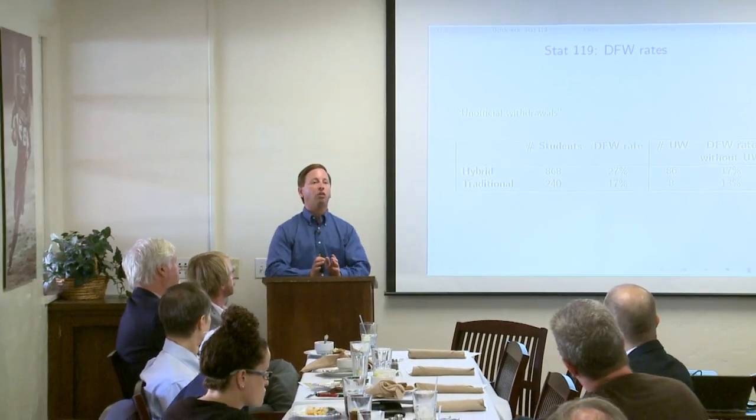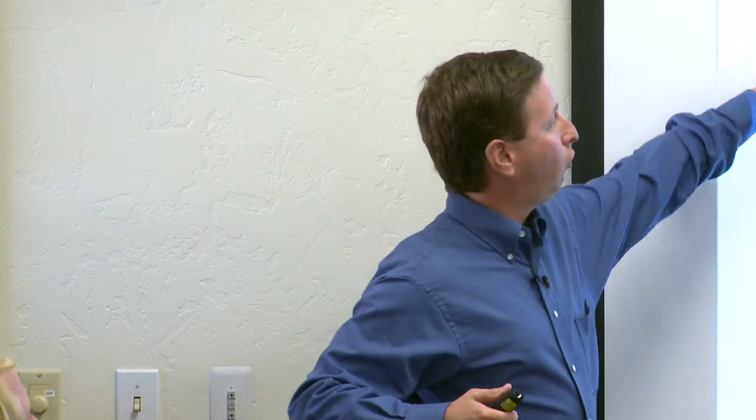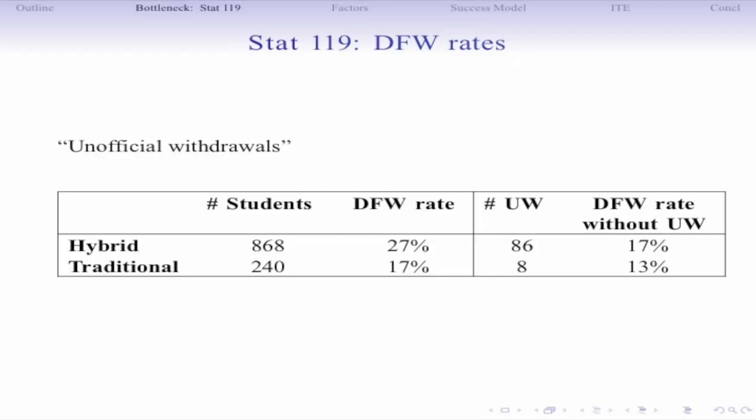The context of the study is STAT 119, an intro business statistics course. At this point it's probably half business students — required for most majors going into the business school — but half the students are just taking it as their quantitative reasoning GE. Right now we're teaching it in two modes: a hybrid version that meets once a week in the classroom with online lectures created by the instructor, and a traditional face-to-face section.